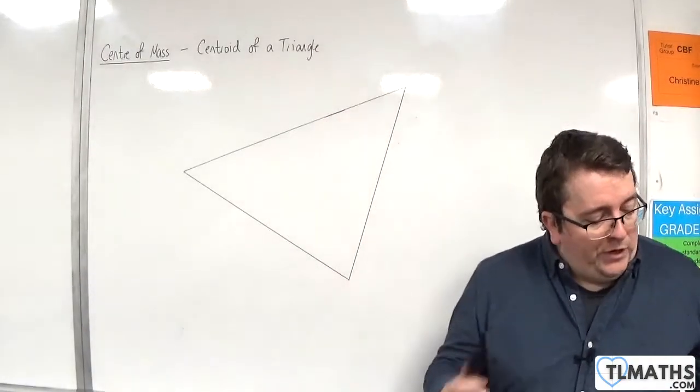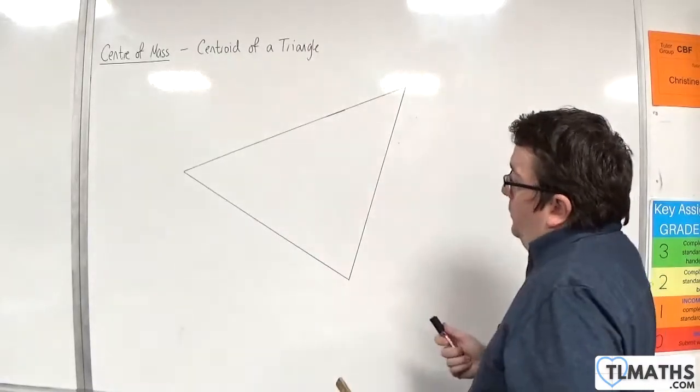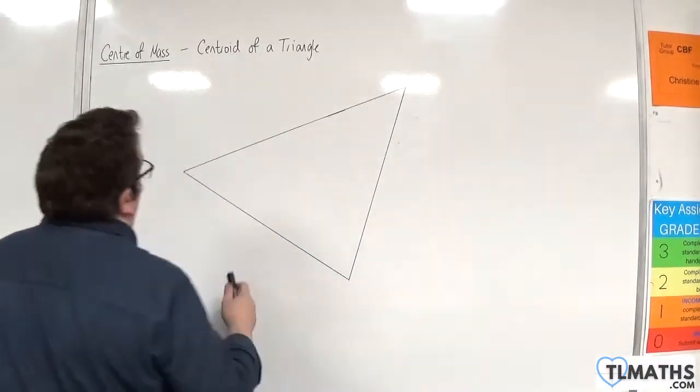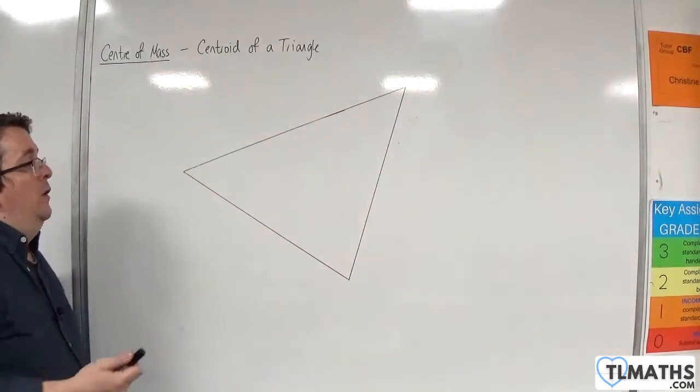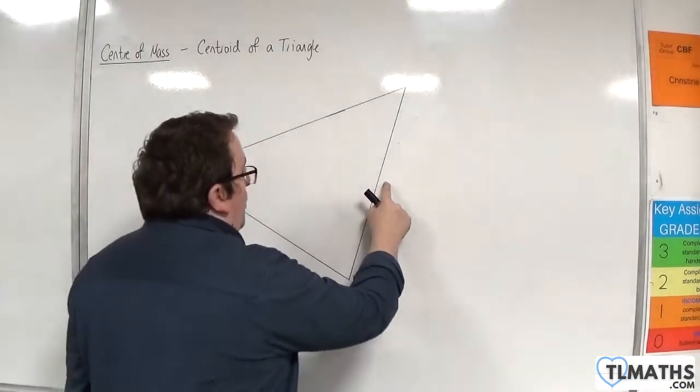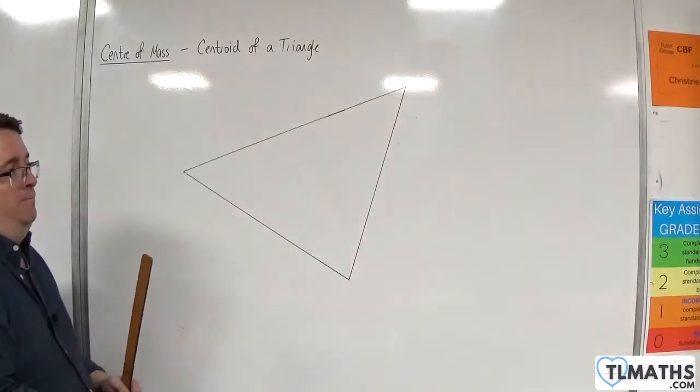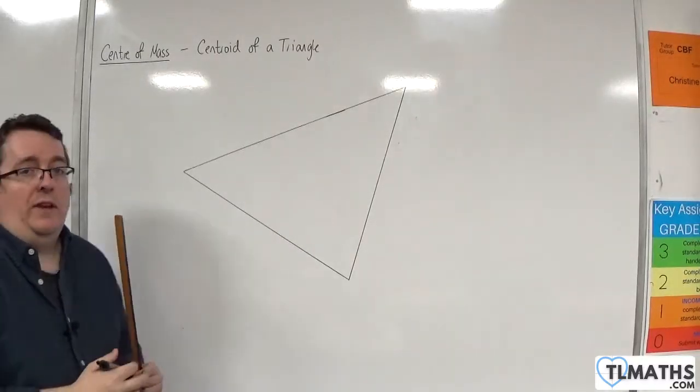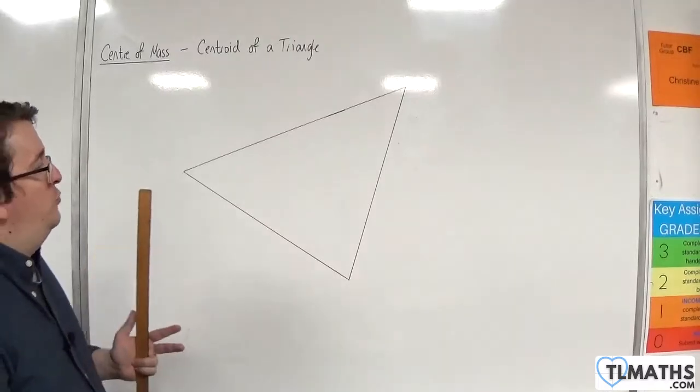Now the centroid of a triangle is found by drawing what are referred to as medians, which are lines from the vertex to the midpoint of its opposite side. Where the three medians intersect will be your centroid.